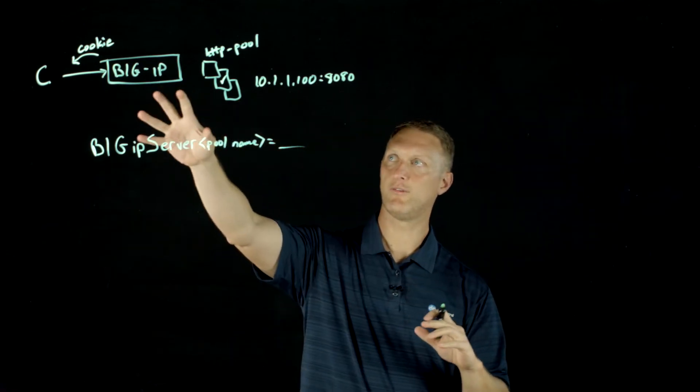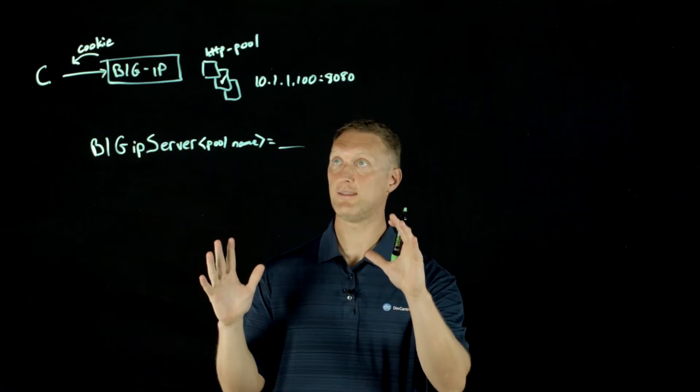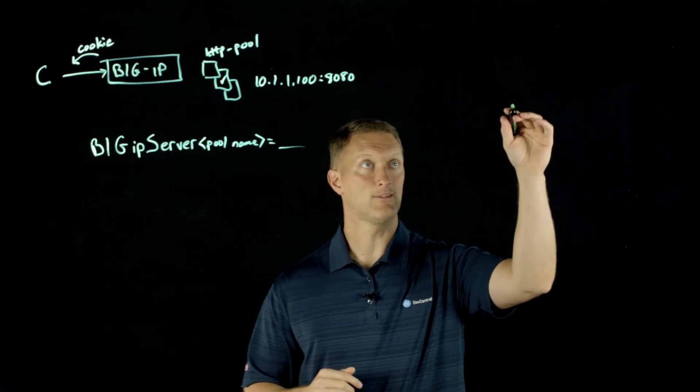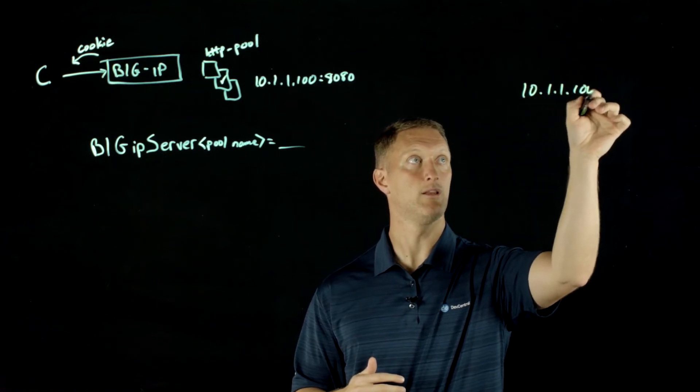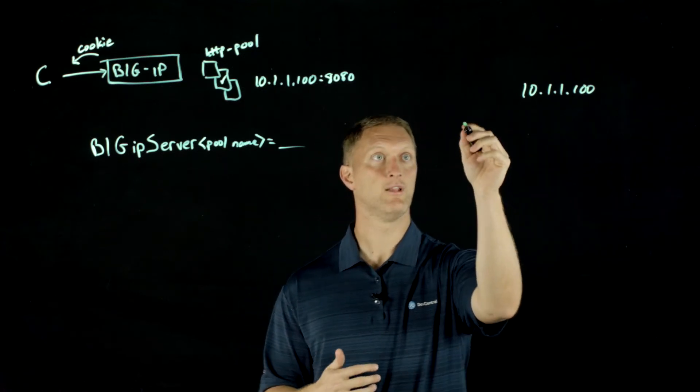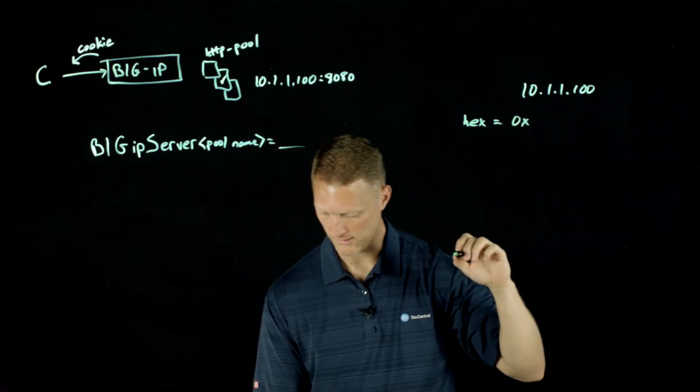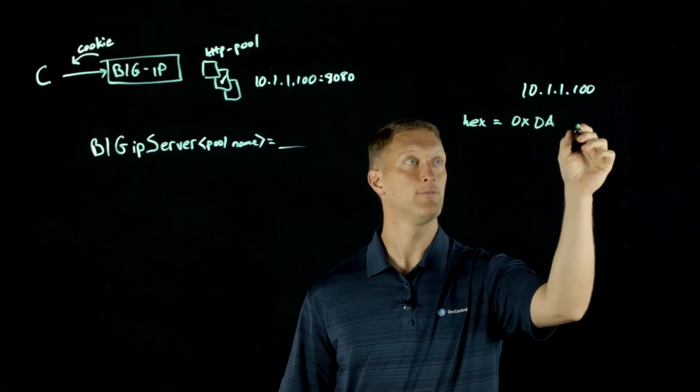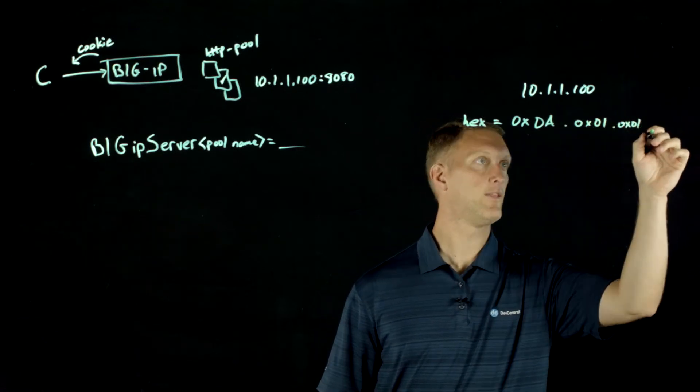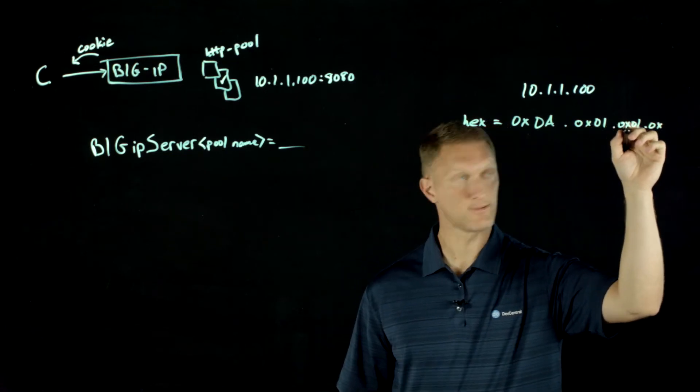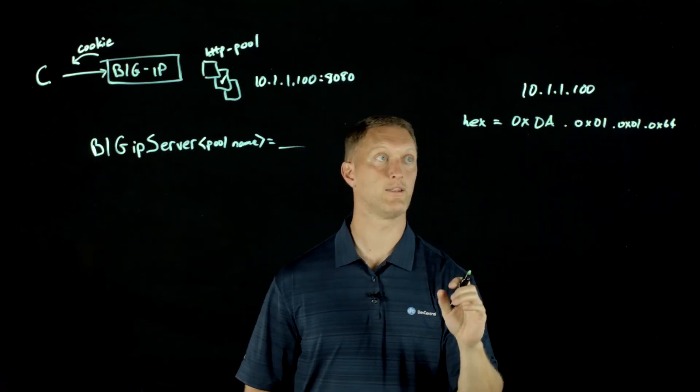Here's what happens. You've ultimately selected IP address 10.1.1.100 at port 8080, and you're going to send a cookie back. The first thing the big IP does is it takes the IP address 10.1.1.100, and it converts that into hexadecimal values. So hex equals 0x0A for the 10 part, and then 0x01 is one, 0x01, and then 0x64 is going to be the 100. We've converted these four numbers into hexadecimal values.